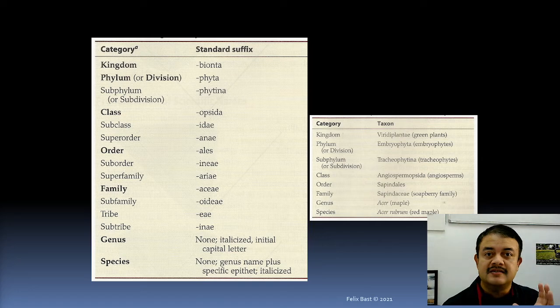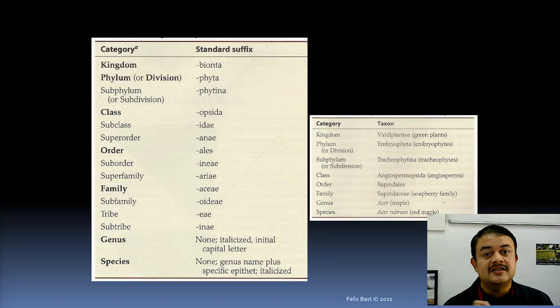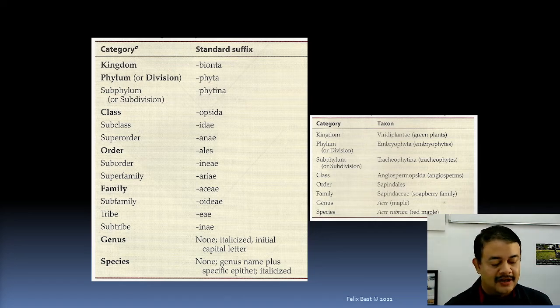A suffix is something written after the noun, while a prefix is written before the noun. For example, 'Mr.' and 'Mrs.' are prefixes, while endings like '-aceae' or '-ales' are suffixes in taxonomy.